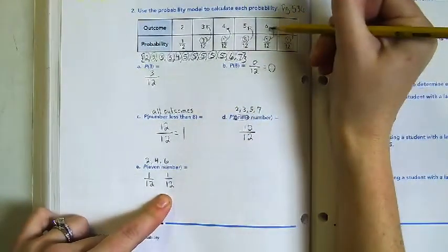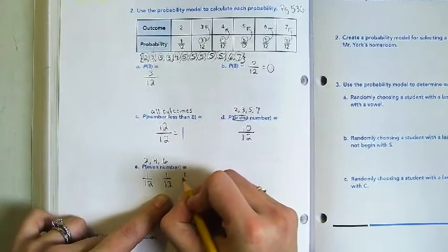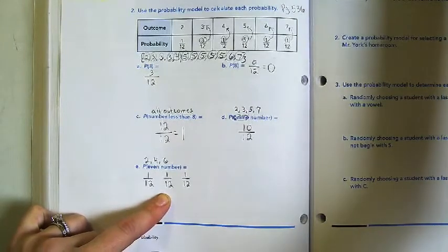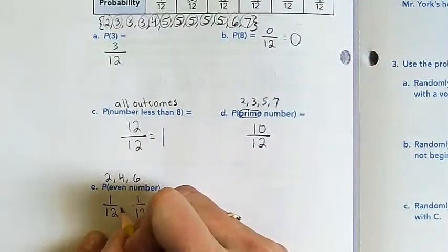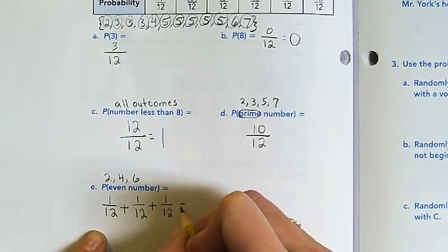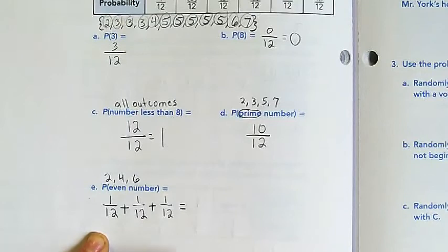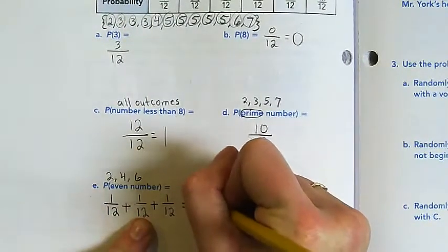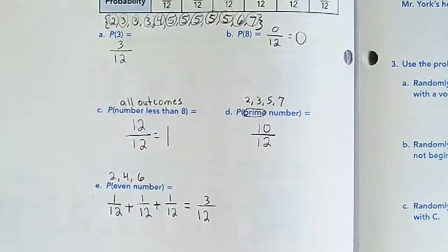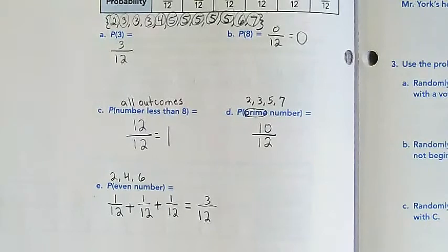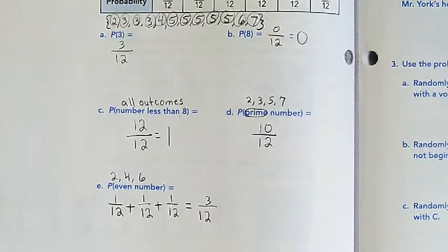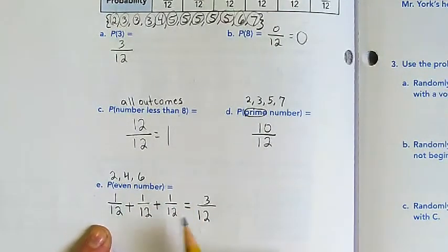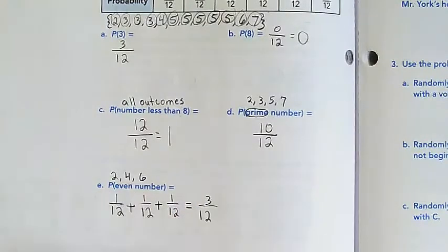The probability of getting a four is one twelfth, and the probability of getting a six is one twelfth. What operation do you think we will do with these fractions? We are going to add them up. One twelfth plus one twelfth plus one twelfth is three twelfths. If you were only using the table, you could find the probability by adding the probability of each even number.